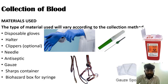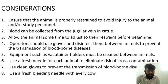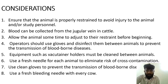Considerations: Ensure that the animal is properly restrained to avoid injury to the animal and study personnel. Blood can be collected from the jugular vein in cattle. Allow the animal some time to adjust to their restraint before beginning. Operators should use gloves and disinfect them between animals to prevent transmission of blood-borne diseases. Equipment such as Vacutainer holders must be cleaned between animals. Use a fresh needle for each animal to eliminate risk of cross-contamination. Use clean gloves to prevent transmission of blood-borne diseases. Use a fresh bleeding needle with every cow.